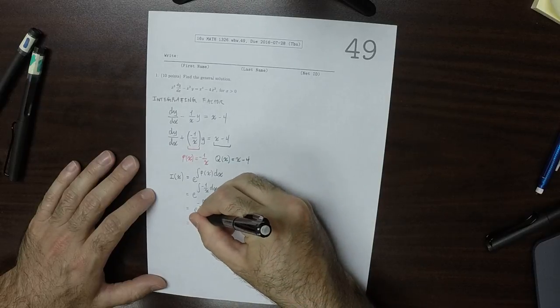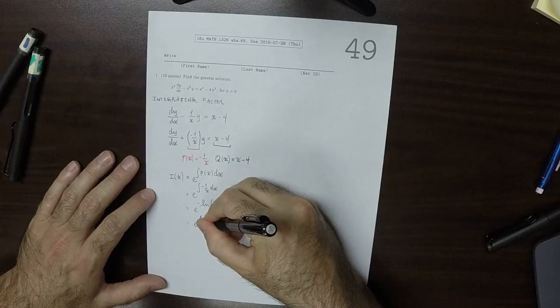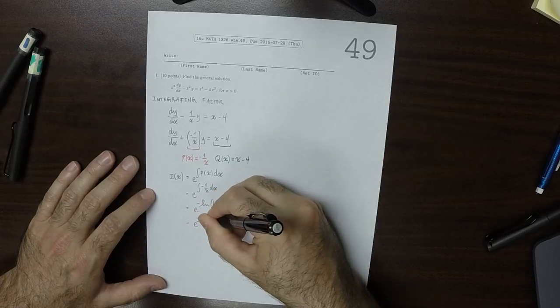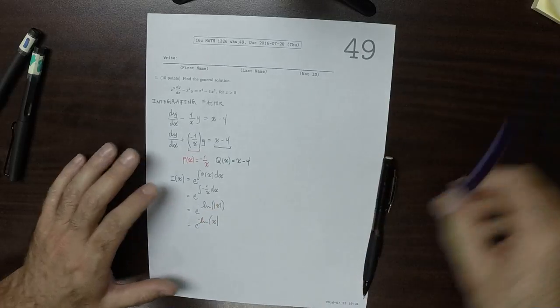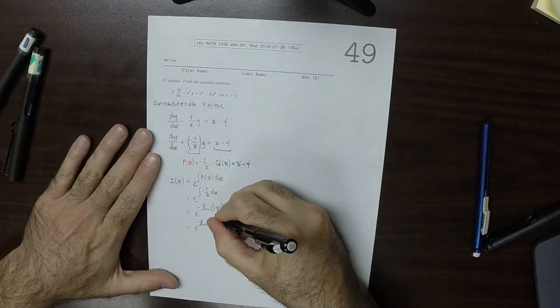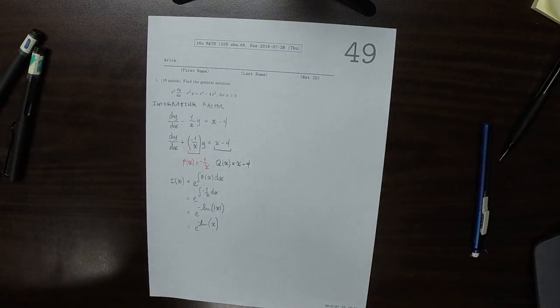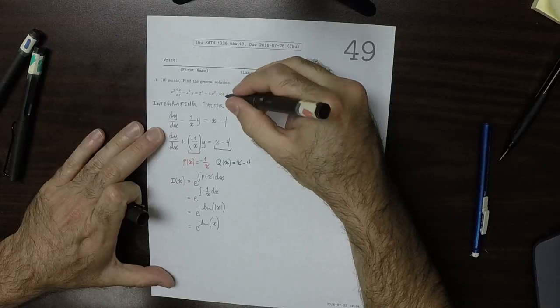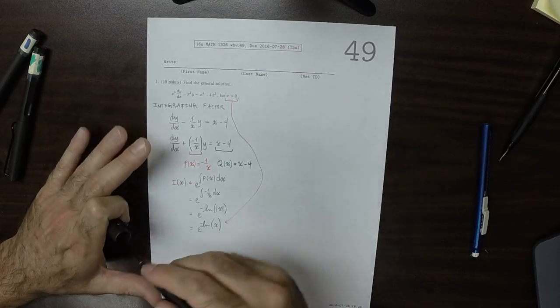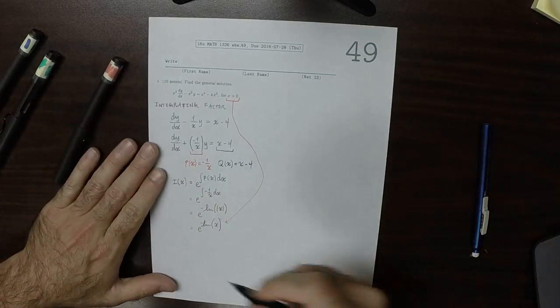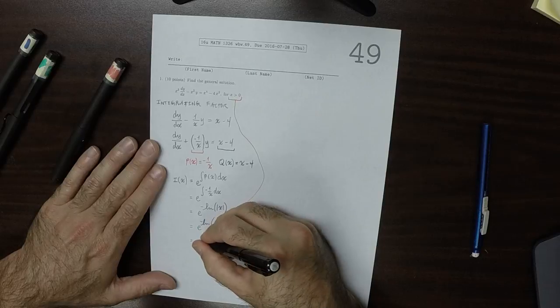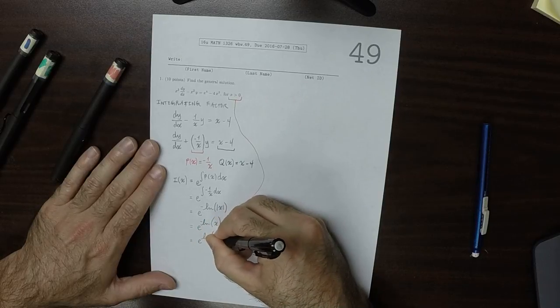So I'll keep the negative for a minute, of just x. And the reason why we can drop the absolute value is because I'm using this piece of information. And then bringing that negative inside the exponential of the logarithm of 1 over x.